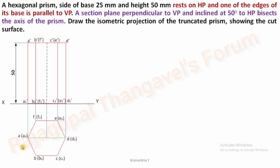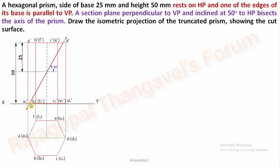As an observer standing here, you can see that A, B, C, D will be visible, while E and F are invisible — that's why E1 dash, F1 dash, E dash, F dash are in brackets. Now for the section plane: the condition is inclined at 50 degrees to HP, bisecting the axis of the prism — the midpoint of the axis out of 50 mm is 25 mm. Through this 25 mm midpoint of the axis, draw an inclined line at 50 degrees to XY. This is our section plane. The upper portion is removed; the lower part is the remaining portion of the solid — convert the remaining portion into thick lines.